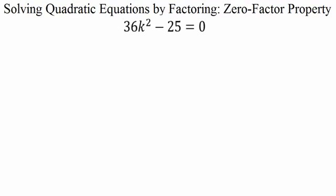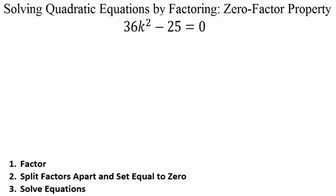Moving on to the next example. Step one, factor the polynomial. First check: do we have a greatest common factor? Looking at the numbers 36 and 25, they don't have anything in common, and there isn't a variable in each term. So no greatest common factor. Next, we determine the factoring technique by counting terms: two terms is almost always difference of squares, three terms is reverse FOIL or grouping, and four terms is grouping.